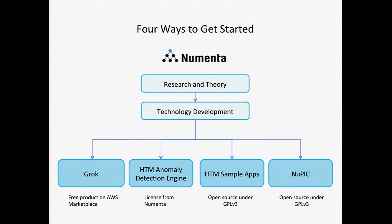At Numenta we do research, we work on theories, we also do technology development into products. Matt and I are going to talk about four different ways that you can use Numenta technology today — all outputs of our development and research process. We're going to talk about Grok, our product, the HTM anomaly detection engine, our HTM sample applications, and finally NuPIC, our open source platform.